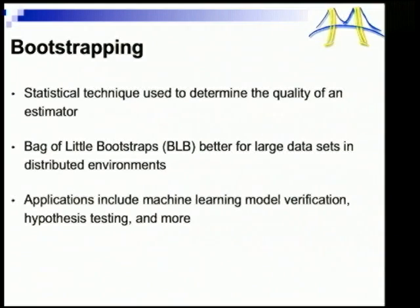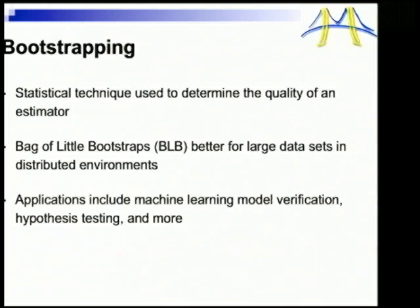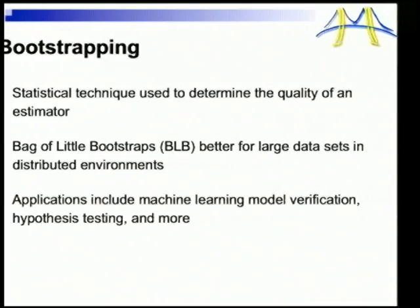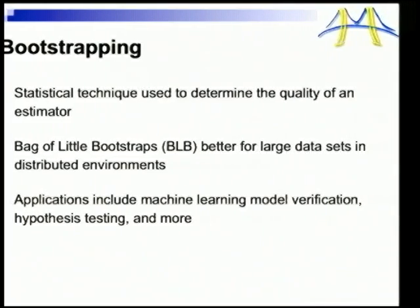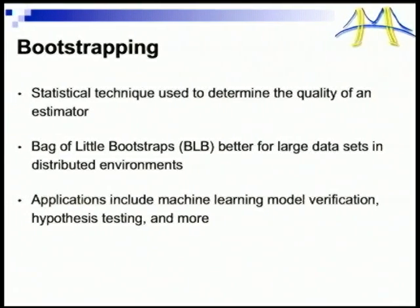One of the shortcomings with the general bootstrap algorithm is that it is not well-suited for large data sets, as it's not easily parallelizable. Fortunately, there is another method called the Bag of Little Bootstraps algorithm, or BLB. BLB was developed by Michael Jordan's machine learning group in the Berkeley AMP Lab. It is a new algorithm that serves the same purpose as the general bootstrap, but relies on statistical sub-sampling to reduce the size of the problem while still producing accurate and statistically robust results.